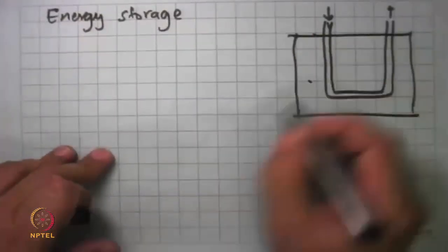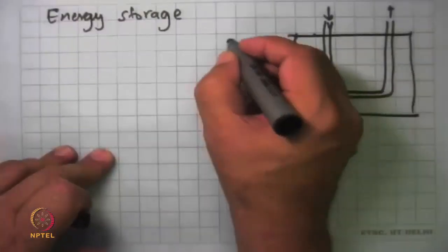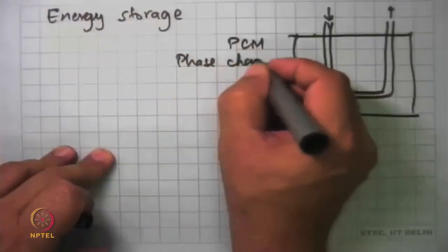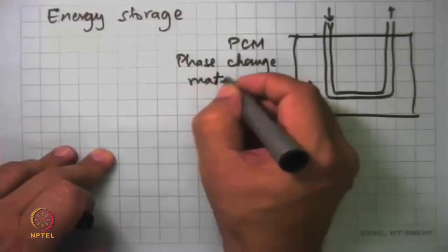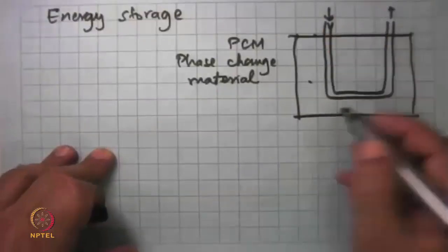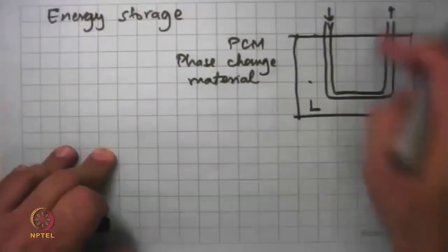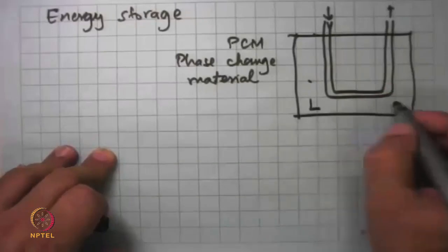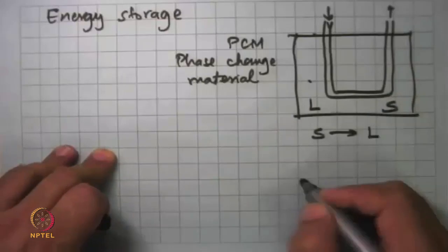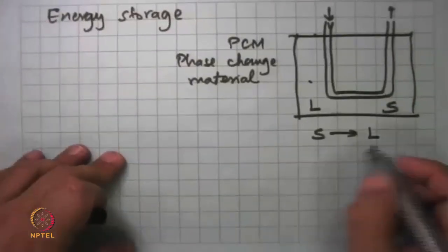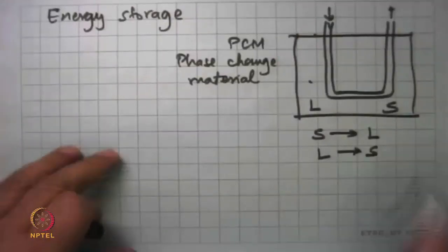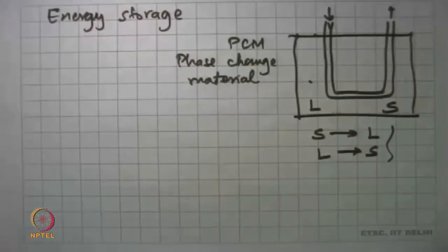Instead of sand or water, we also use what is called a PCM — phase change material. It is nothing but some sort of a salt: when you are heating it, it goes into liquid phase; when you take the energy away from it, it comes back to solid phase. During the heating phase it goes from solid to liquid with very little temperature change, and when drawing energy out it goes from liquid to solid. That is what we do in energy storage.